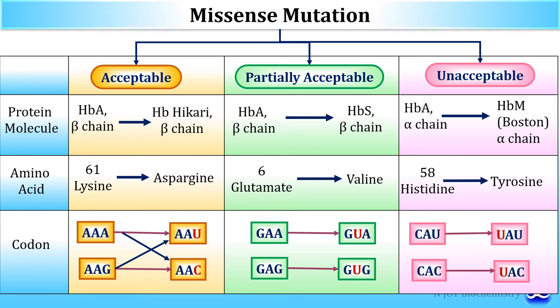The unacceptable missense mutation is in the alpha chain of hemoglobin, where it changes to HBM, the Boston hemoglobin. At position 58 on the alpha chain, histidine is changed to tyrosine. CAU and CAC code for histidine, and there is a change in the first nucleotide base: C is changed to U, making CAU and CAC become UAU and UAC. So histidine is changed to tyrosine and HBA becomes HBM, an unacceptable missense mutation.